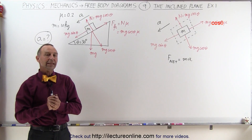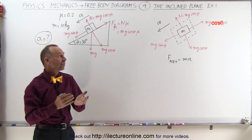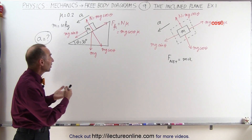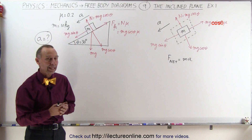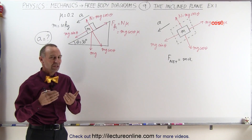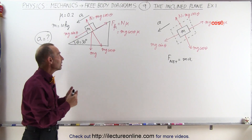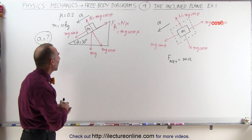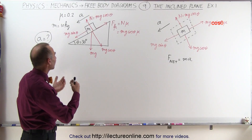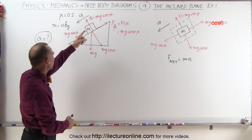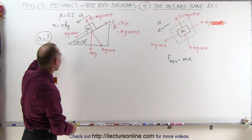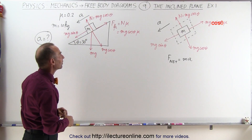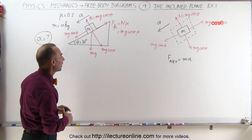Welcome to our lecture online. In this example we're looking at an object on an inclined plane. There is friction between the mass and the plane, and we're trying to find the acceleration, assuming that the acceleration will be down the inclined plane.